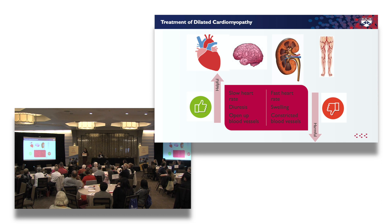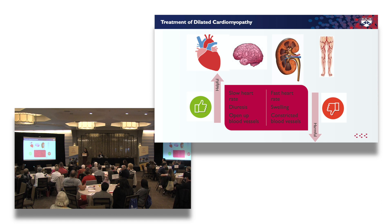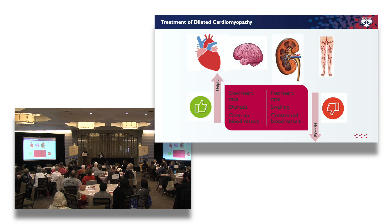The treatment of dilated cardiomyopathy hinges on what the heart looks like and what's going wrong. What I learned in medical school is that it's not just your heart that is involved — it's your brain, your kidneys, and your blood vessels. When those organs aren't getting enough blood supply, they react, and some of that reaction is initially helpful but over time becomes harmful. That's what we target with medications: we try to slow the heart rate, get rid of some fluid through diuresis, and open up the blood vessels in your legs to allow the heart to do less work.